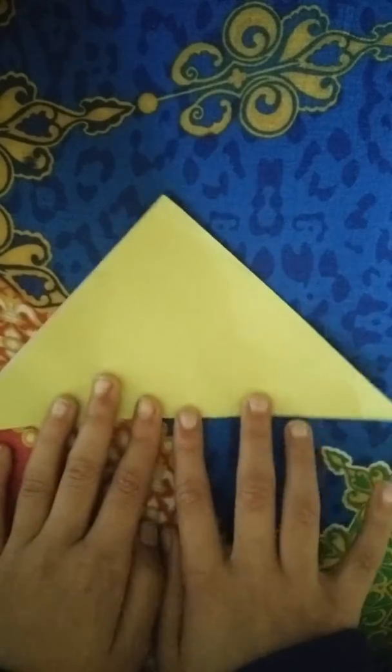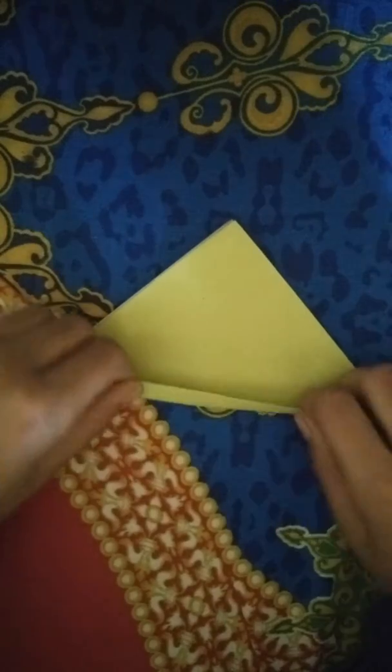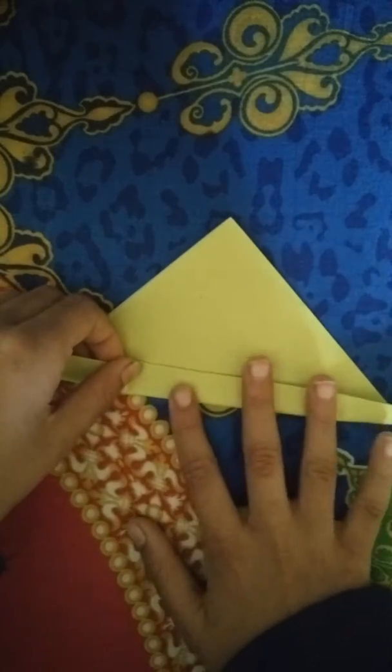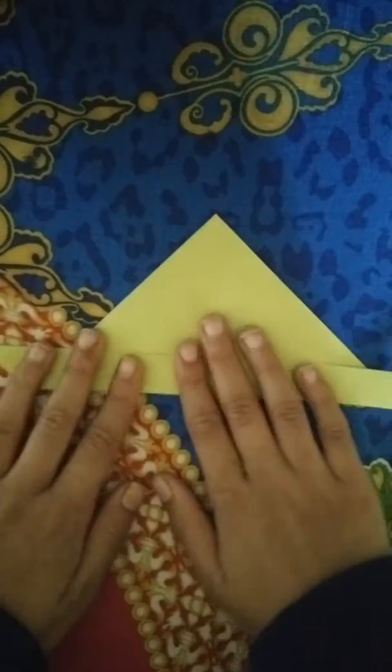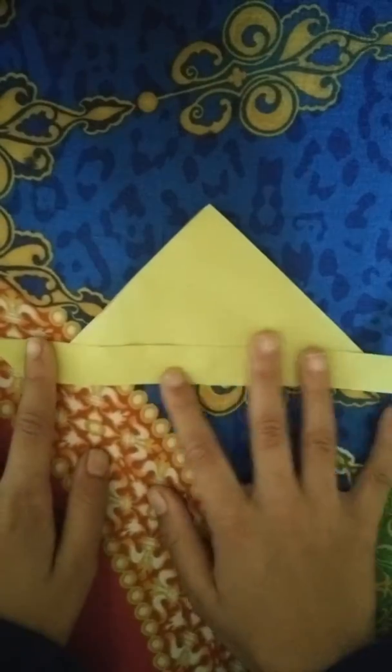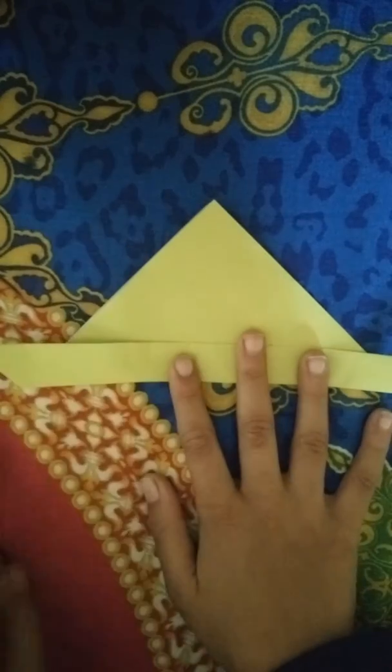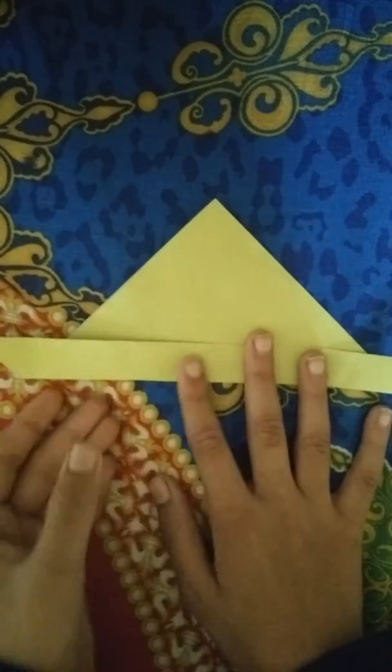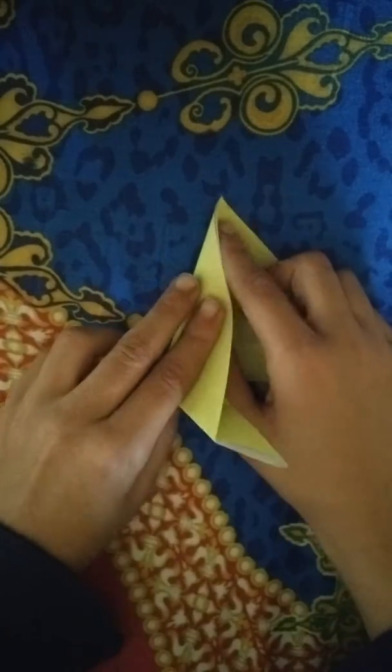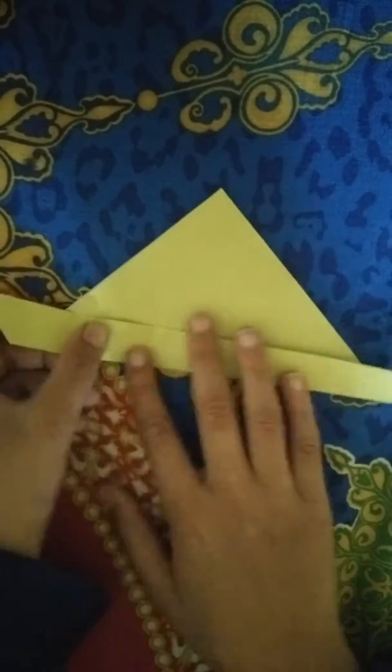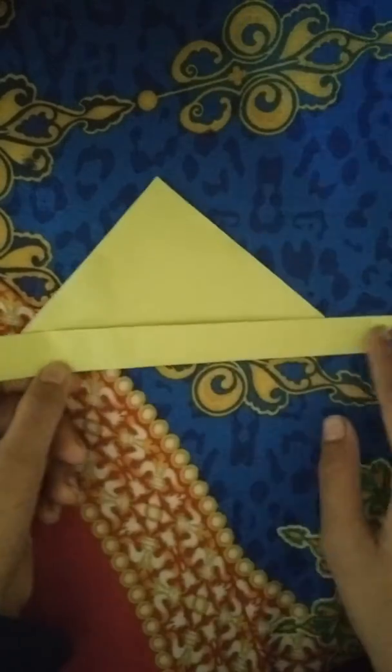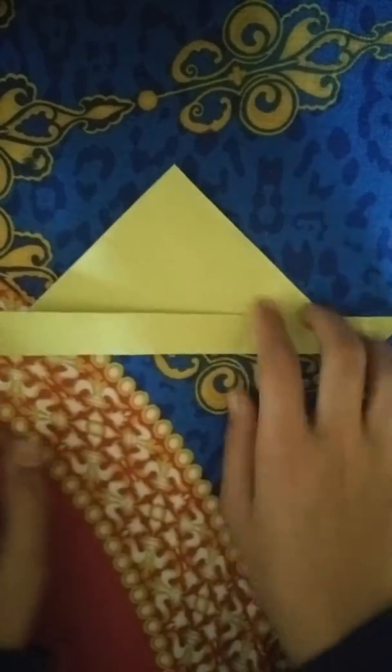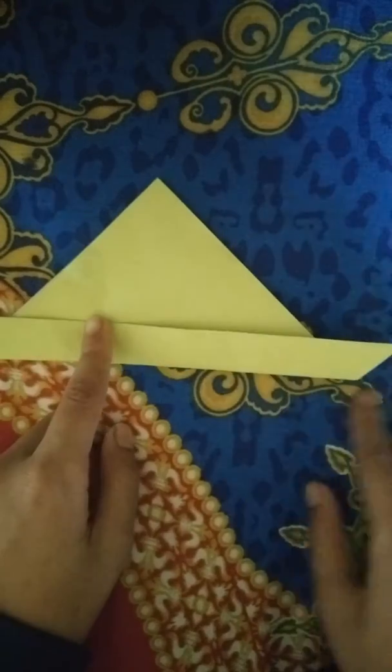Now rotate and take this edge and fold it. Now take this edge on this line. We don't have any line over here, so we will make a line. Take this corner on this corner.